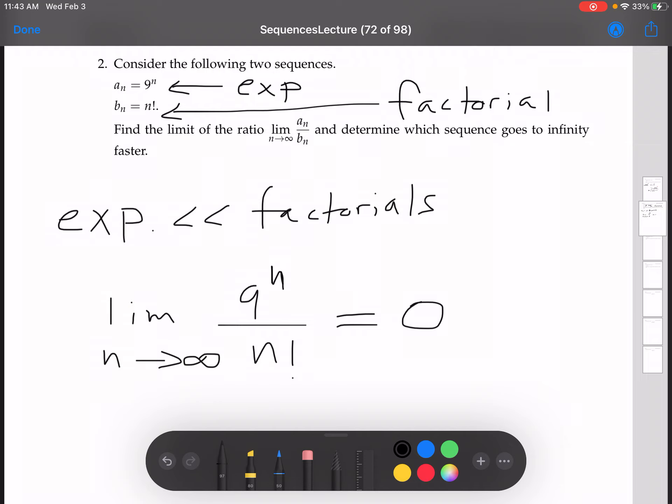Now, we couldn't use L'Hopital's rule for this one, because we'd have to take the derivative of n factorial. The derivative of n factorial, I don't know how to do that. Maybe there's a formula for that, but I don't know it. So that's not going to work.